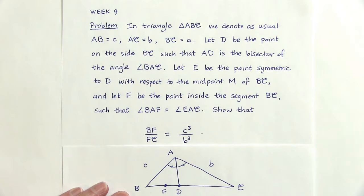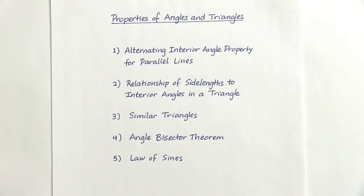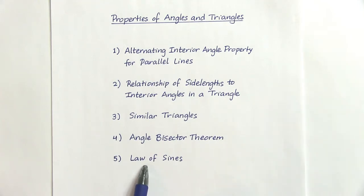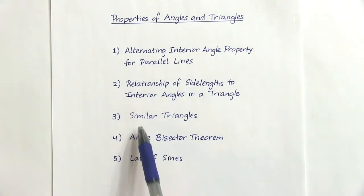Before we can understand the question and solve the problem of the week, let's review some properties about angles and triangles. These are the five properties I want to review. The first one, labeled last, is called the law of sines. You don't need to know any trigonometry to solve the problem, but if you know the law of sines it gives an alternative method. It is also useful for understanding properties 2 and 4.